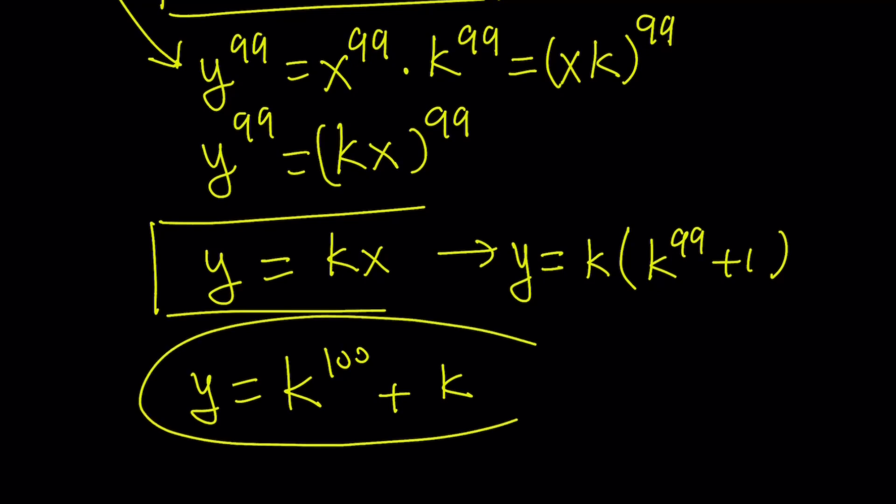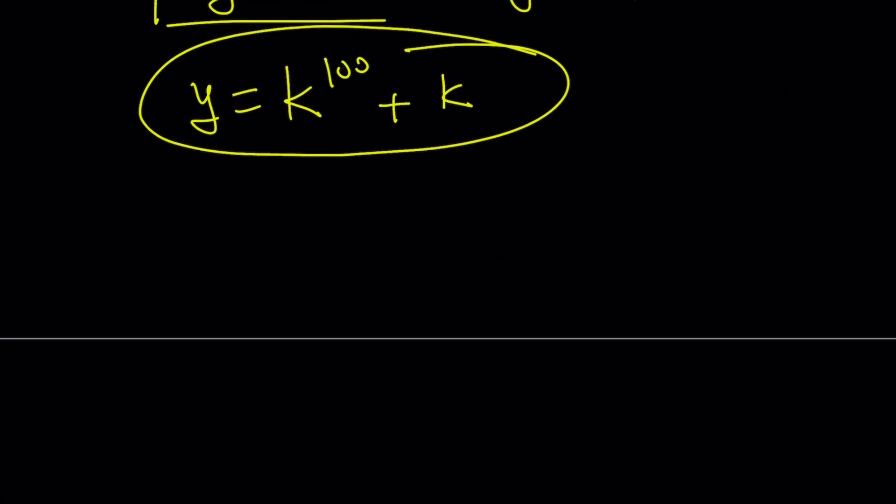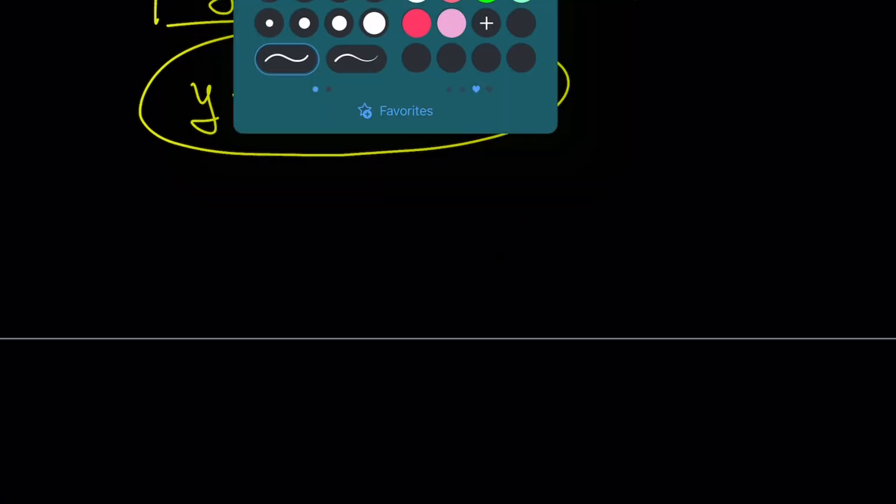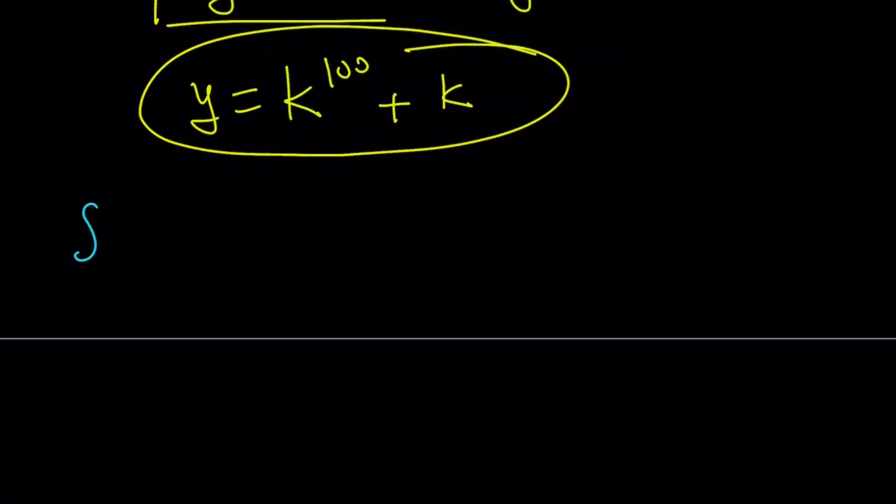That's going to be my y value. So I got the x value, I got the y value, so we can go ahead and write our solutions in the following form. We can write it as ordered pairs, and this is going to be x value k to the power 99 plus 1, and the y value is going to be k to the power 100 plus k, as you can see here. And of course, this set is defined where k is always an integer.